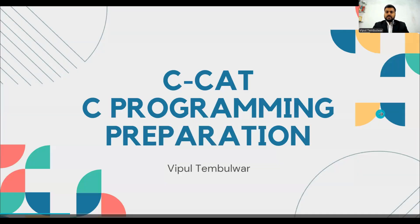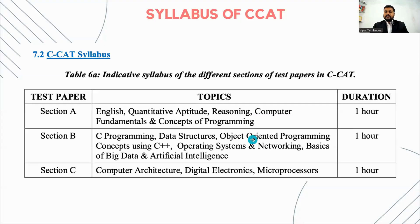As you all know, the C-CAT exam is comprised of three sections: Section E, D, and C. All sections have different topics as mentioned in the PPT. In this video, we are going to discuss about the C programming syllabus.